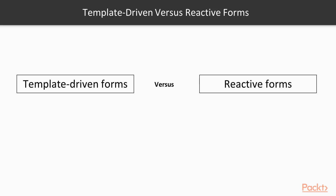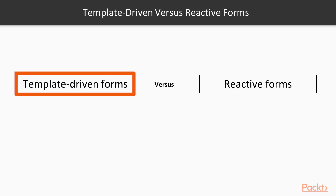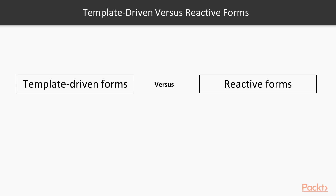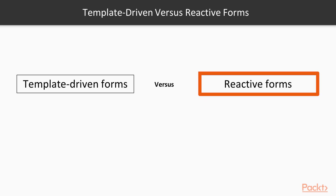In Angular, to apply validation to a form, there are two ways. One way is from the template view where we can apply some directives to achieve control on the form — this way is named template-driven forms. The other method is applied by creating the control object inside the component, and this way is named reactive forms.